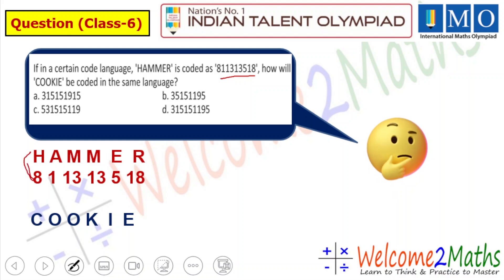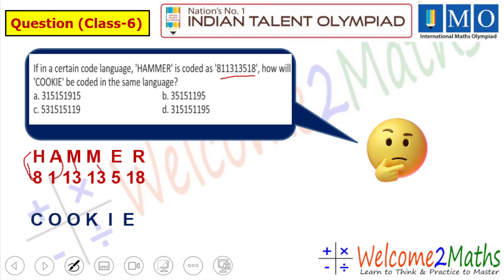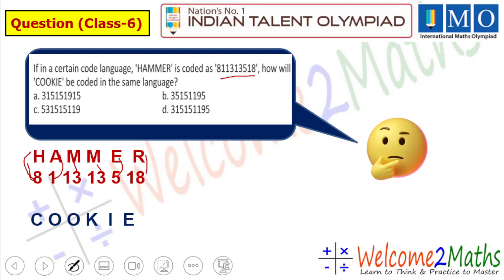A is the first letter. M is the 13th letter, and then again M — so it would be 13 again. E is the 5th letter and R is the 18th letter. In this way, 'hammer' is coded. That means 'cookie' would be coded in the same way.